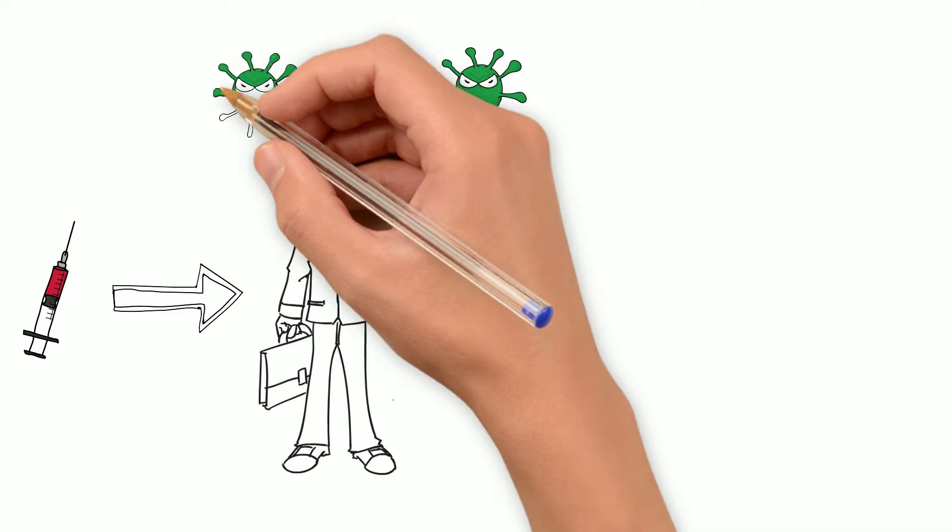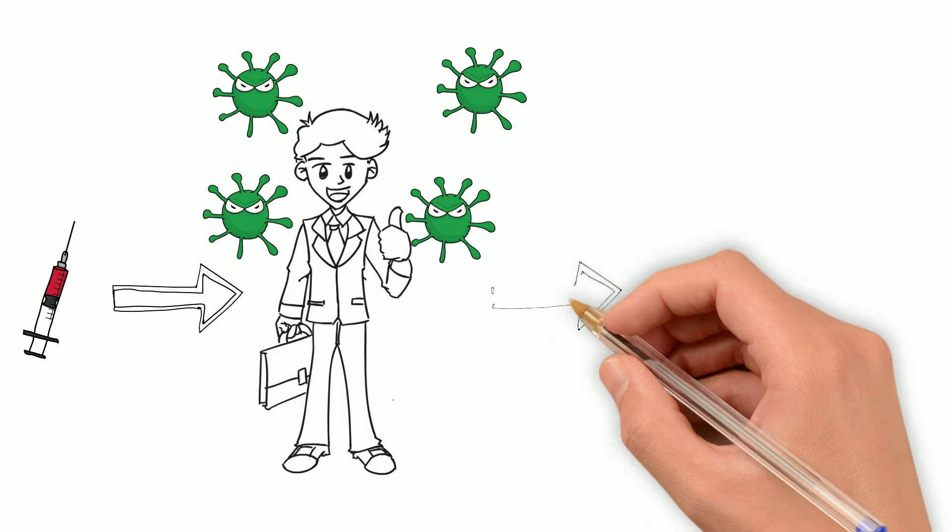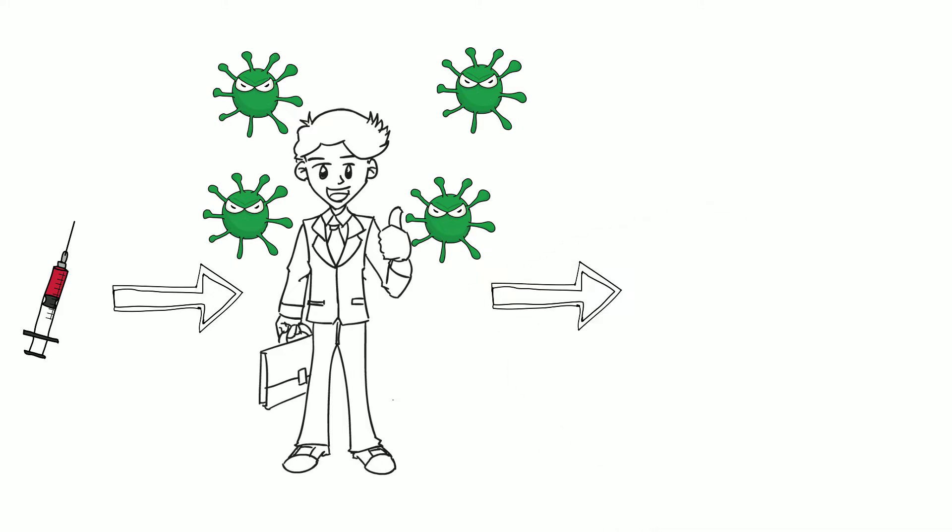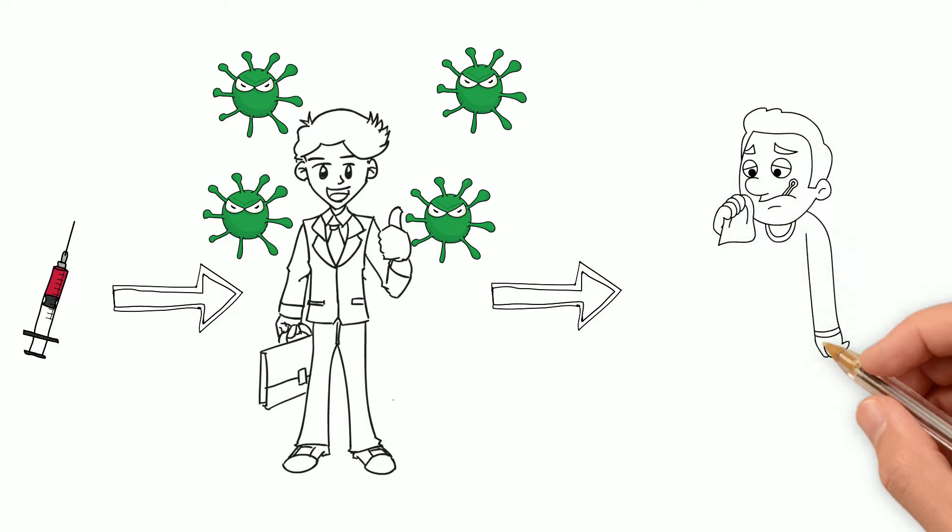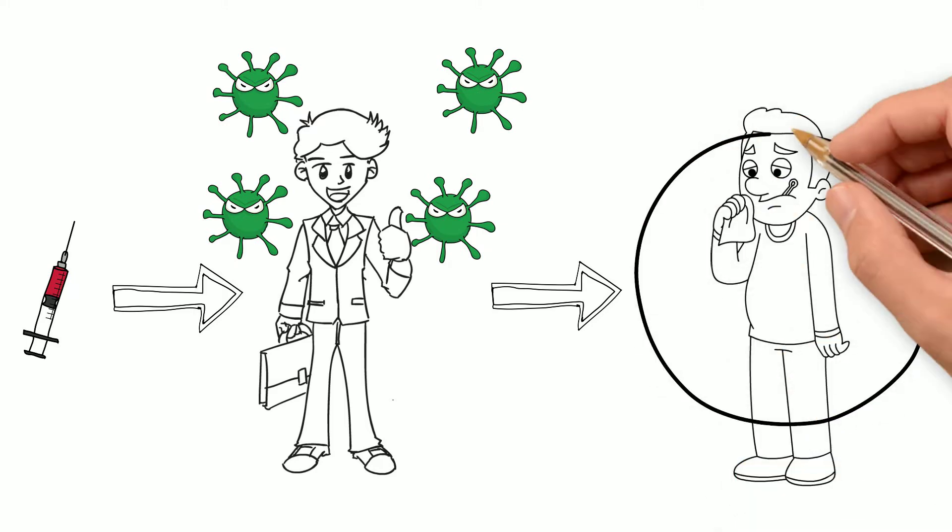If you've had a vaccine against a certain illness, say chicken pox for example, and you are exposed to the virus that causes chicken pox, the vaccine helps your body kill off the chicken pox virus before it can make you sick.